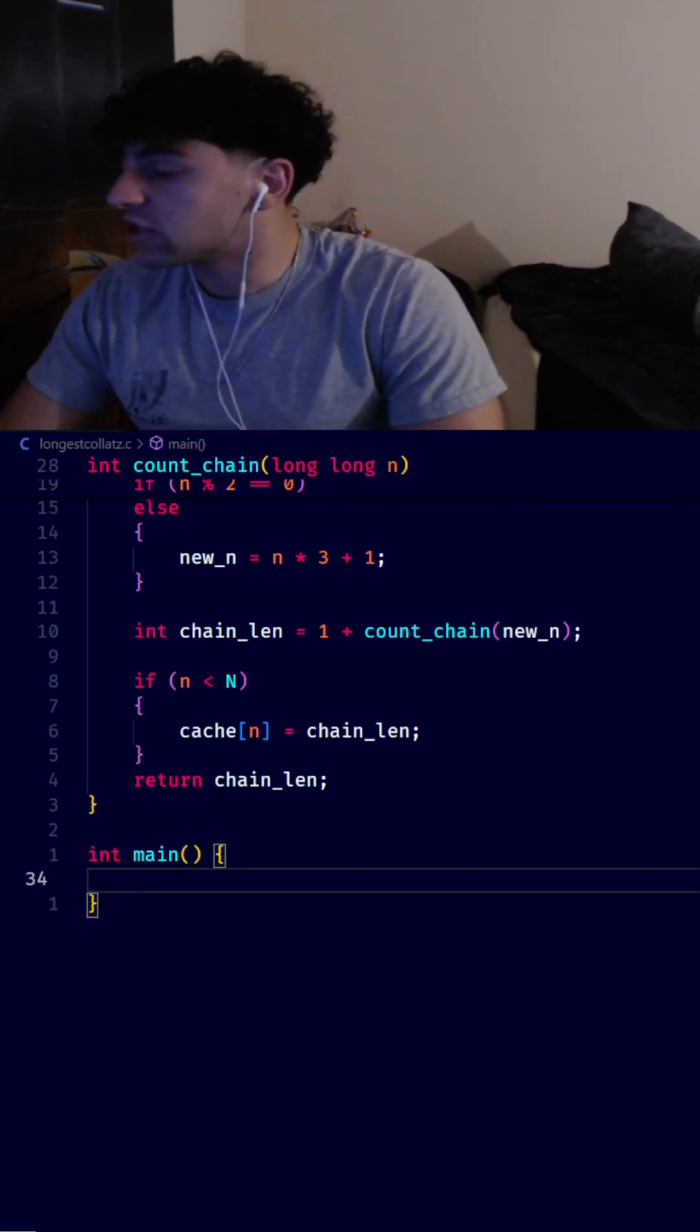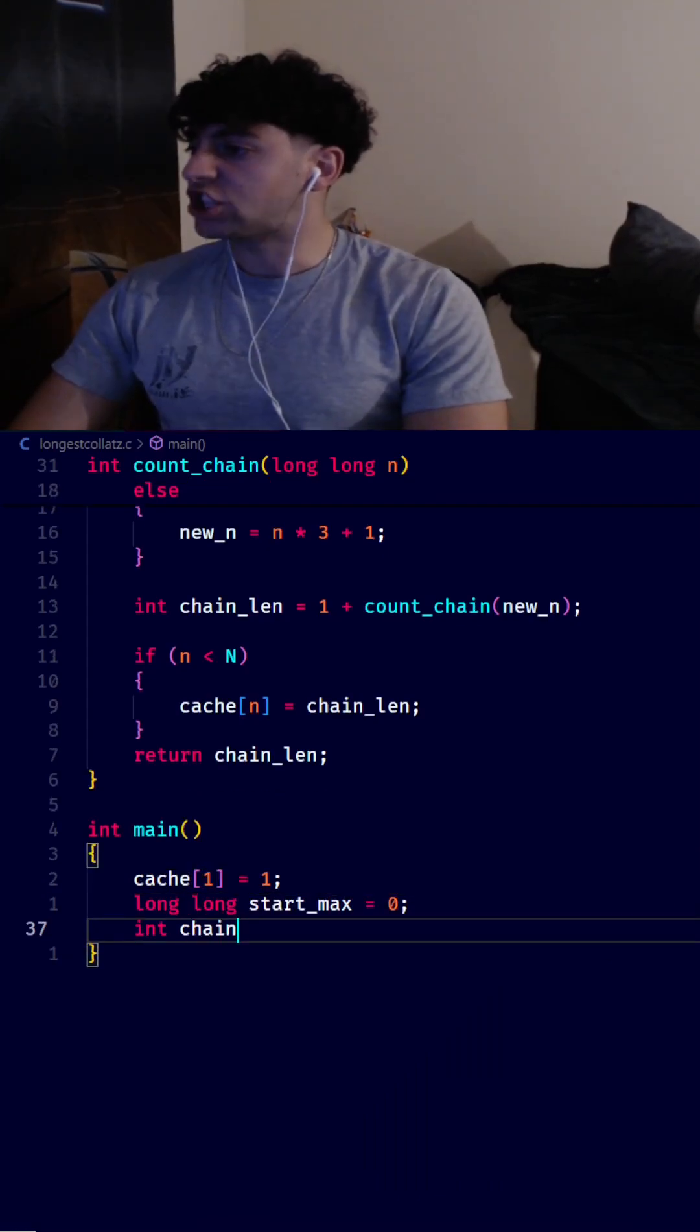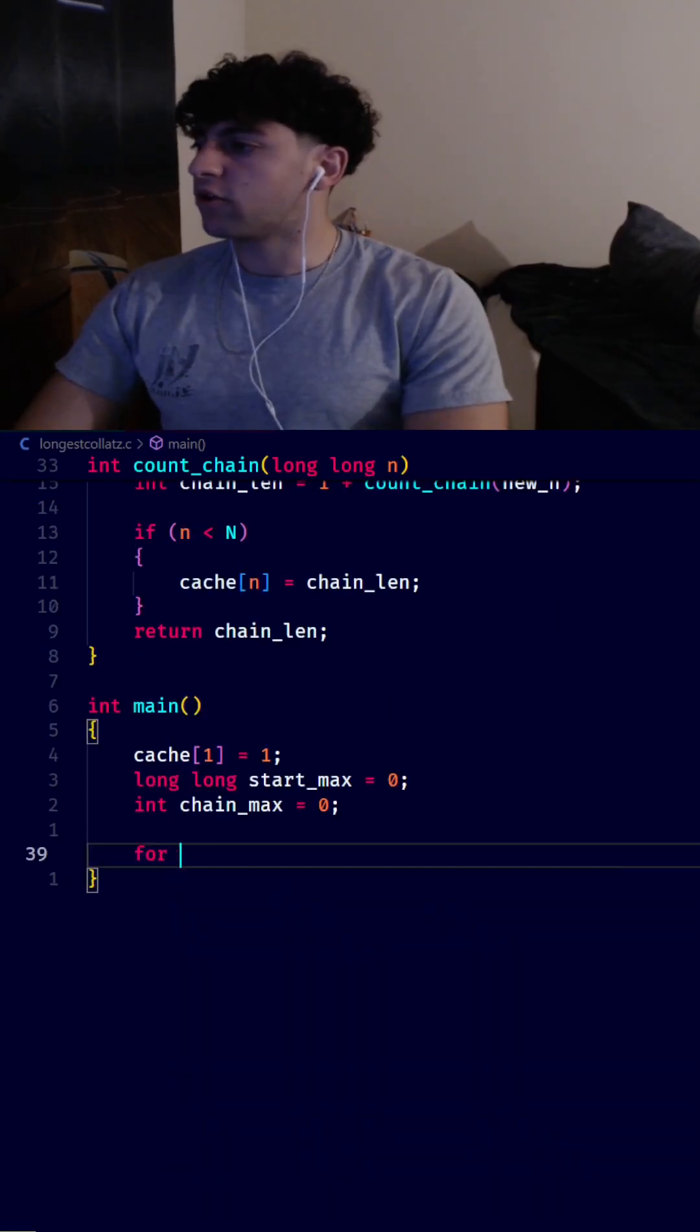In our main method, we'll initialize our base case, which is cache[1] equal to 1. Next, we'll have two variables start_max set equal to 0 and chain_max set equal to 0. Now we'll do for int i is equal to 1, i smaller than 1 million, i++.